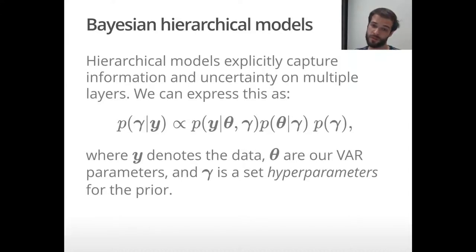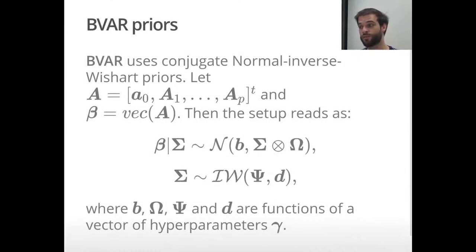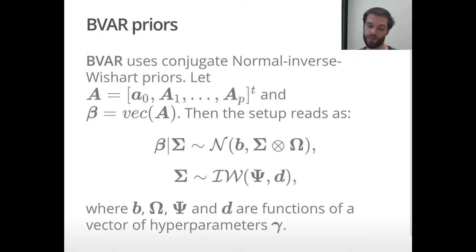We extend Bayes' theorem in a simple way where y denotes the data, beta are the VAR coefficients, and gamma is a set of additional hyperparameters. This is quite appealing theoretically but often hard to implement. To improve computational efficiency, BVAR uses a conjugate normal inverse Wishart prior setup. Beta, our coefficient vector, is then conditionally on sigma just a normal density, and sigma comes from an inverse Wishart density. The prior parameters B, omega, psi, and d are just functions of a vector of hyperparameters gamma.